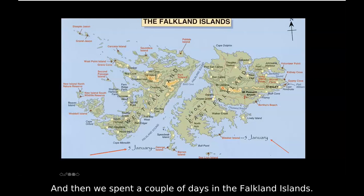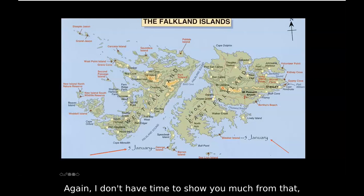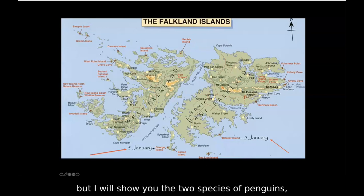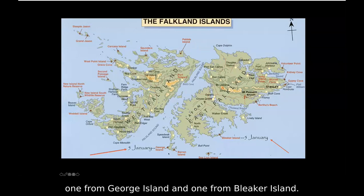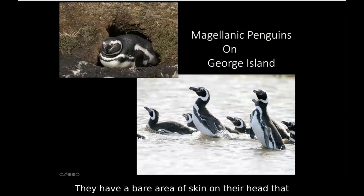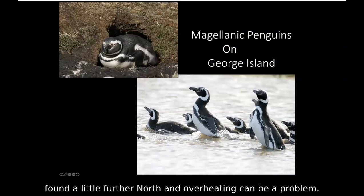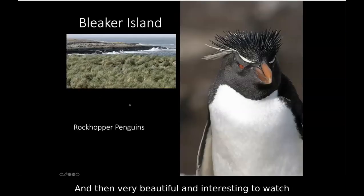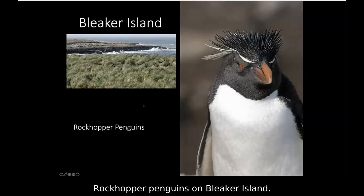We spent a couple of days in the Falkland Islands. We saw Magellanic penguins on West Falkland — they were in their burrows and have a bare area of skin on their head that allows them to dump heat, since they're found a little further north and overheating can be a problem. And we saw beautiful and interesting rockhopper penguins on Bleaker Island.